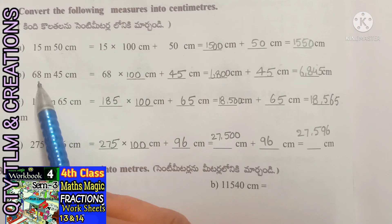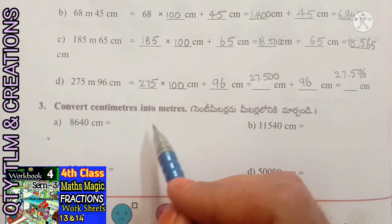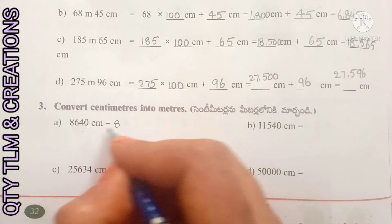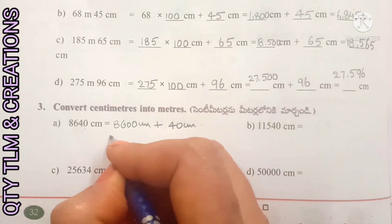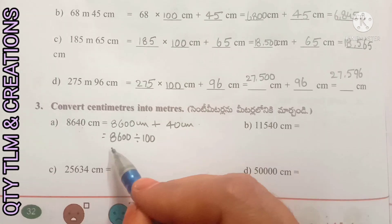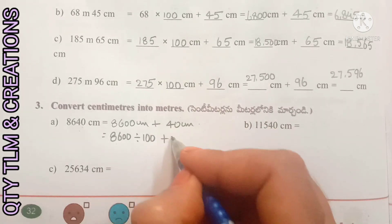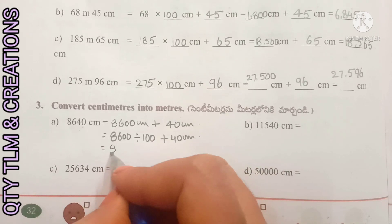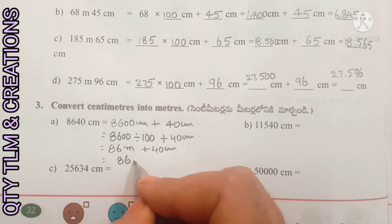While converting meters into centimeters, we have to multiply with 100. Next question: convert centimeters into meters. To convert centimeters into meters, we divide the given number by 100. Here, 8,640 centimeters: 8,600 centimeters plus 40 centimeters. 8,600 divided by 100 equals 86 meters, plus 40 centimeters equals 86 meters 40 centimeters.